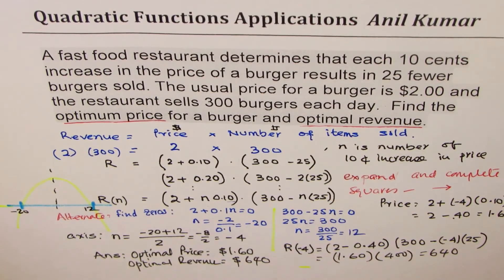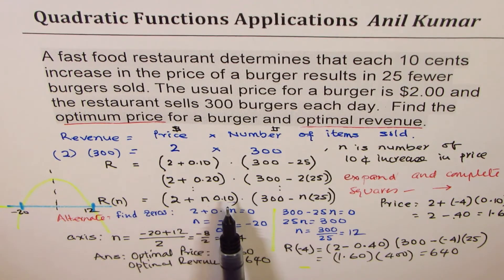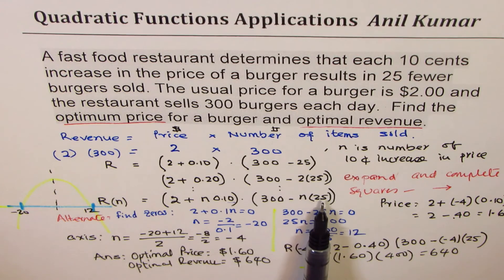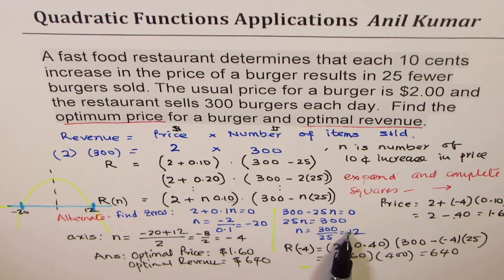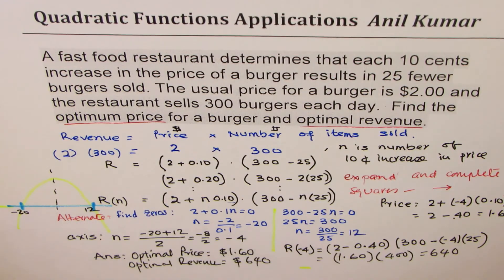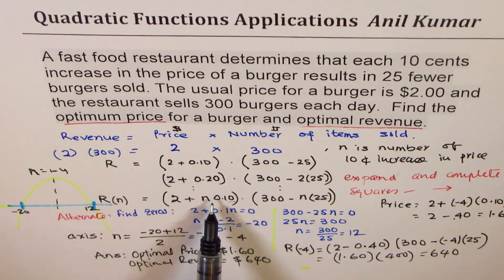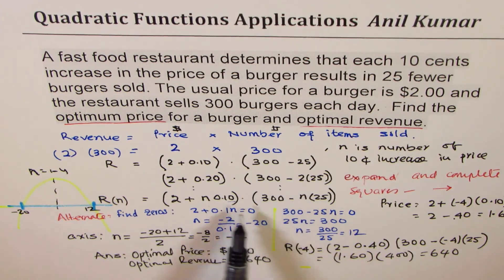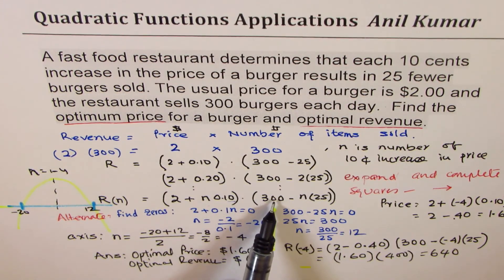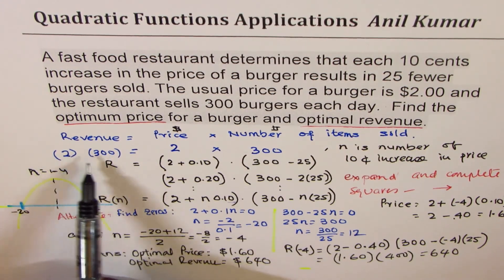So that is how you could use the factored form. What we did was we found the equation for the number of increases of 10 cents. Number of decrease in sales was by n times 25. Multiplying them, we get revenue. Equating each factor to zero, we found the zeros for our graph at minus 20 and 12. Average value gives us the axis at minus 4. Substituting minus 4, we got the optimal price of $1.60. So that means you have to reduce the price, increase the sale. When you reduce the price to $1.60, you're able to sell 400 burgers. Revenue will be $640, not $600 which was initially there. So you increased your revenue by $40.